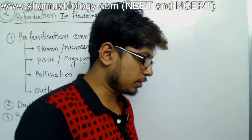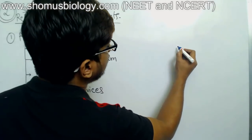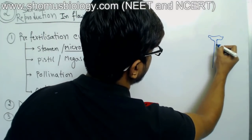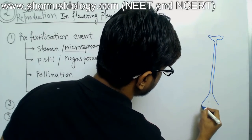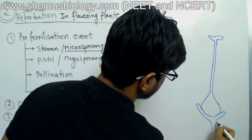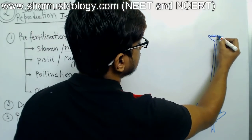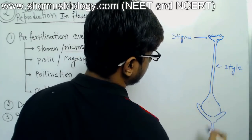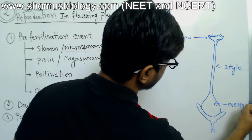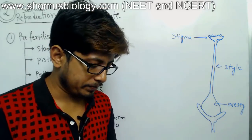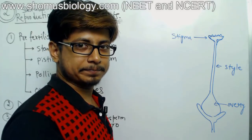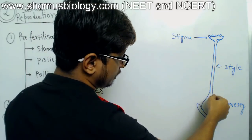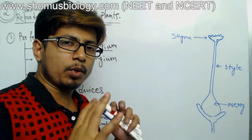So what is the pistil? The female part of the flower looks something like this — it has a receiver at the top, and then at the end it has a structure. This top part is known as the stigma, this is known as the style, and this is the ovary. The stigma is the receiver of the male gamete. Pollen grains drop onto the stigma and then start germinating, forming the pollen tube through the style, and finally reaching the ovary.